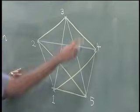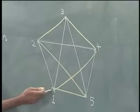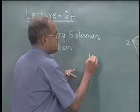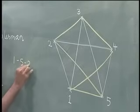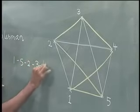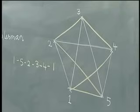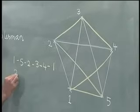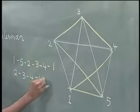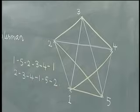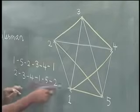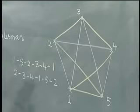In a 5-city traveling salesman problem, if the person starts at city 1, a feasible solution could be 1 to 5, 5 to 2, 2 to 3, 3 to 4, and 4 to 1. We realize this solution is the same as starting from 2 to 3, 3 to 4, 4 to 1, 1 to 5, and 5 to 2. In a TSP, it does not matter which city the traveling salesman starts from.